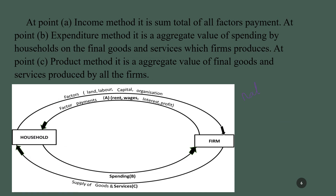Dear students, we can calculate national income by three methods. One is the income method, one is the expenditure method, and one is the product method. Under the income method, we add all factor incomes: wages for labor, interest for capital, rent for land, and profit for the organizer. The sum of wages, interest, rent, and profit gives national income.